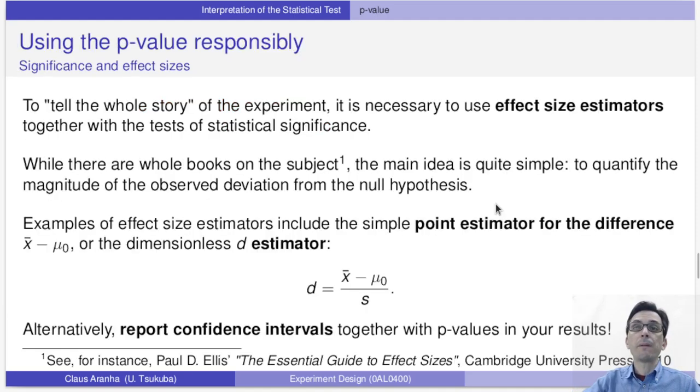To avoid this kind of problem we can calculate something called an effect size estimator. Remember that the p-value calculates how surprised we are at a result, but it does not calculate the size of the result. The effect size estimator calculates the size of the result or how far away it is from the expected null hypothesis. We can calculate it by dividing the difference observed in the experiment by the error of the sample. Another way to improve our understanding is to calculate confidence intervals together with the p-value in our report. The confidence interval also gives us the size of an estimated error and can be very useful to understand the result of an experiment.